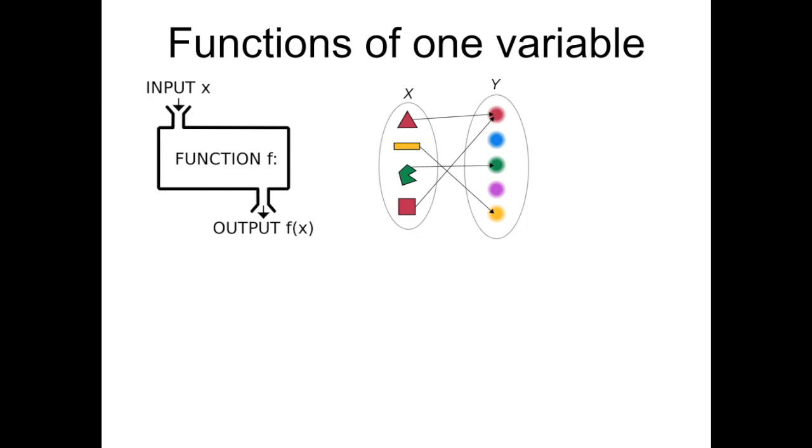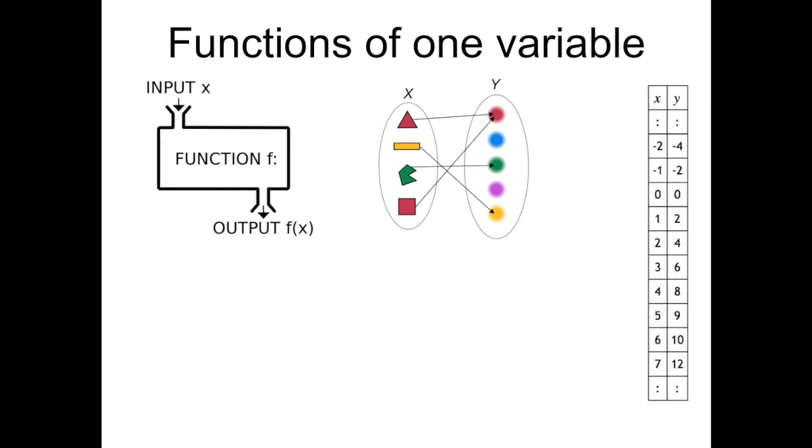There is another way, which is maybe a little bit more detailed, when the elements of a set are numerical, to express a function. And this is by tabulating all the possible values of the so-called independent variable, here indicated by x, and for each of these elements, indicating the only one element corresponding to it, the element called y.